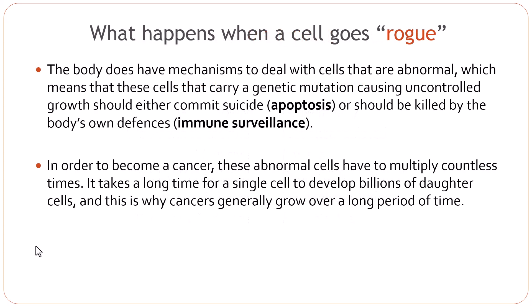So what happens when a cell goes rogue? These cells start breaking the rules. The body does have mechanisms to deal with abnormal cells — cells that carry genetic mutations or errors usually commit suicide through apoptosis, which is programmed cell death, or they are killed by the immune system. In order to become a cancer, these abnormal cells have to multiply countless times, and it takes a long time for a single cell to develop billions of daughter cells. This is why cancers generally grow over a long period of time.